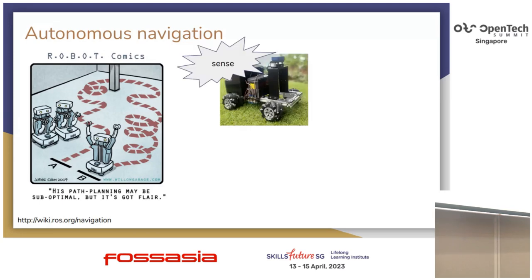There are several components that go into autonomous navigation. First, you need an agent, and typically this agent needs to be able to sense the world around it. For mobile robots, sensors come in a variety of forms: you have LiDARs, cameras, stereo cameras, etc. These help the agent develop an understanding of the world around it. We have our eyes and stereo vision that help us perceive the world and infer depth. Similarly in robotics, we have sensors that can do the same.